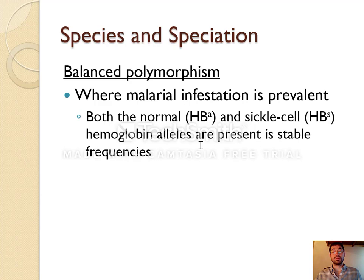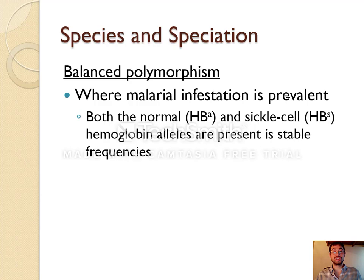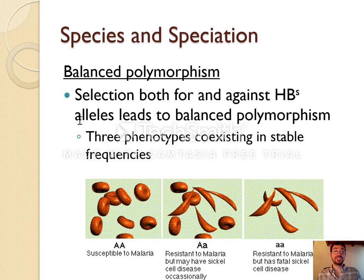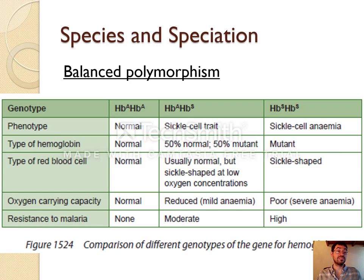Another example of allele frequency change in humans has to do with sickle cell anemia — where there's a lot of malaria, sickle cell alleles become more common than in places where there's not. The sickle cell allele actually gives some malaria resistance, so it's selected for in areas with a lot of malaria. However, the homozygous recessives are strongly selected against. So you essentially have a balance: being purely sickle cell anemia kills you, but not having it makes you more likely to get killed by malaria. Being heterozygous is more common, and we actually see that 50/50 split as the most common trait in areas with a lot of malaria.